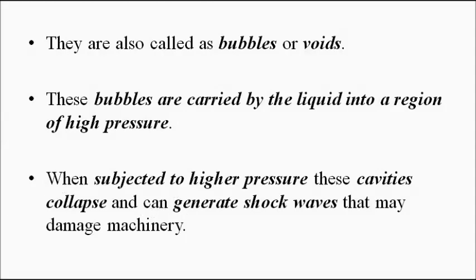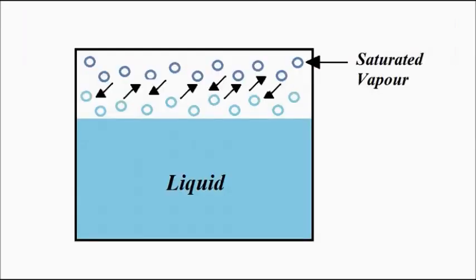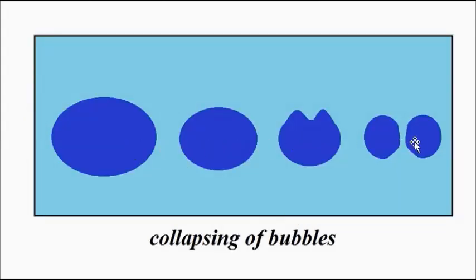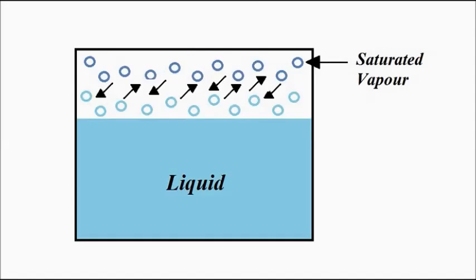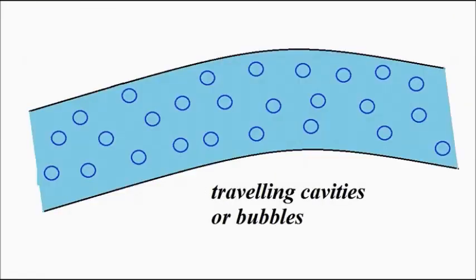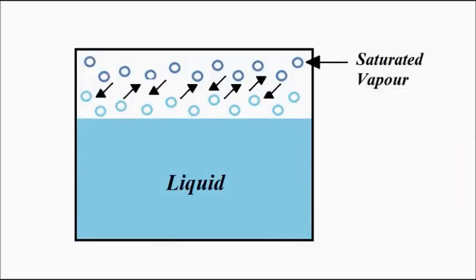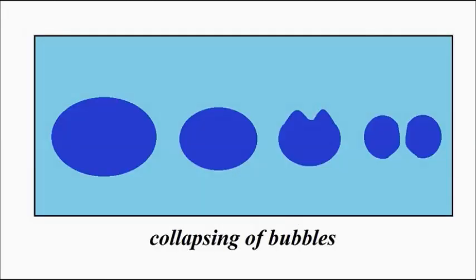Cavitation occurs when the static pressure of the liquid goes below its saturation vapor pressure, leading to the formation of small vapor-filled cavities which are carried by the liquid flow to a high pressure region, where they finally collapse producing shock waves that can cause damage to machinery. We discussed vapor pressure through liquid-to-vapor and vapor-to-liquid conversion and also with the help of a phase diagram of water. I hope you liked this video — please subscribe to Engineering Tutorial for more videos related to engineering, science, and technology.